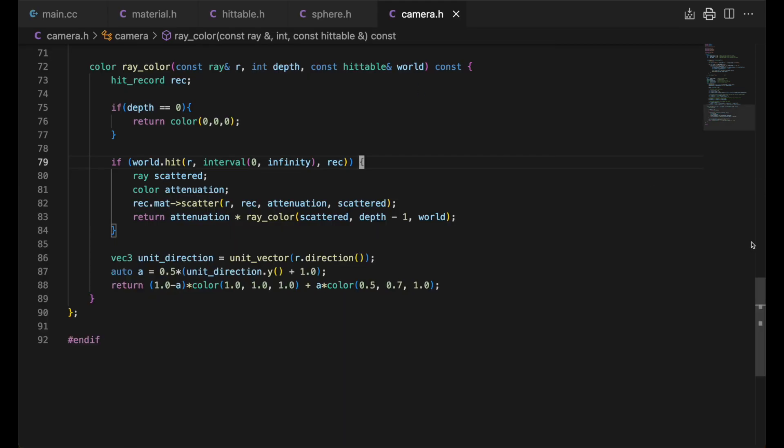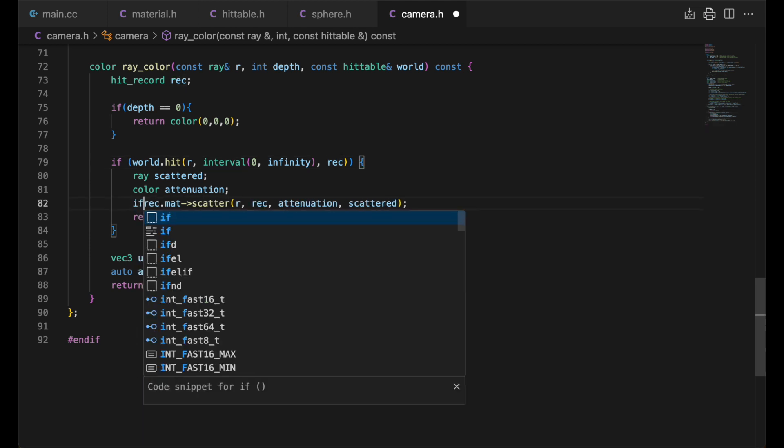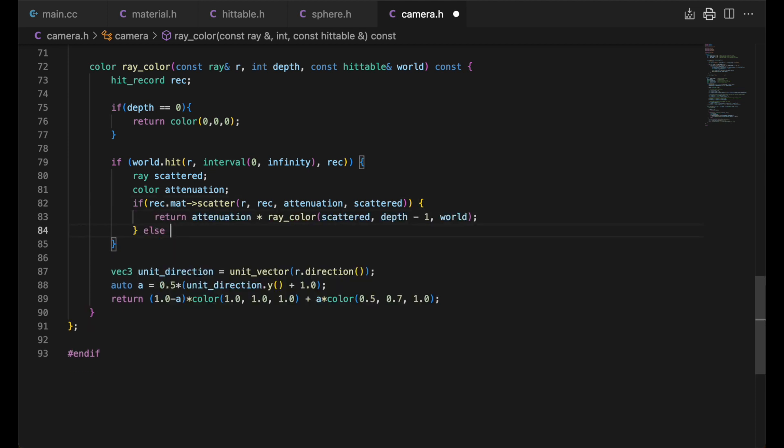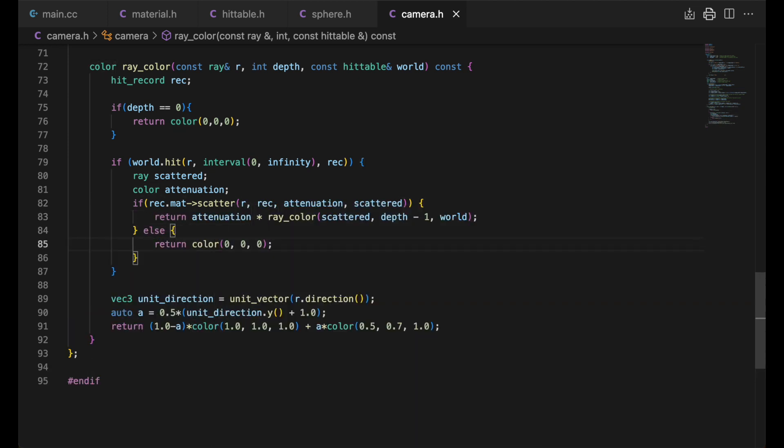Note, I didn't bother with the fact that scatter returns a bool earlier, but I will now. If, as we will soon see, this returns false, we'll take that to mean the ray was totally absorbed by the material, and we'll return the color black.